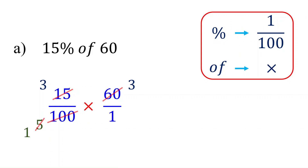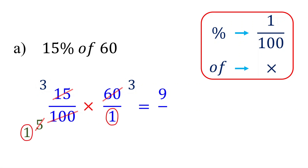Now we can multiply across. In the numerator, we are left with 3 times 3, which equals 9. In the denominator, we are left with 1 times 1, which equals 1. Therefore, 15% of 60 is 9.